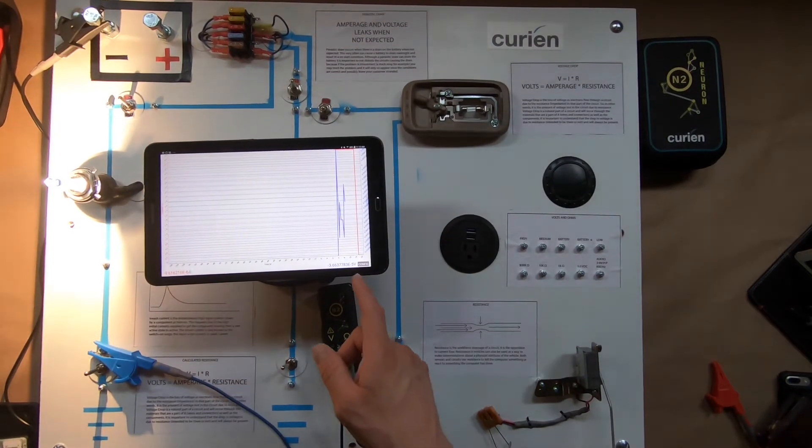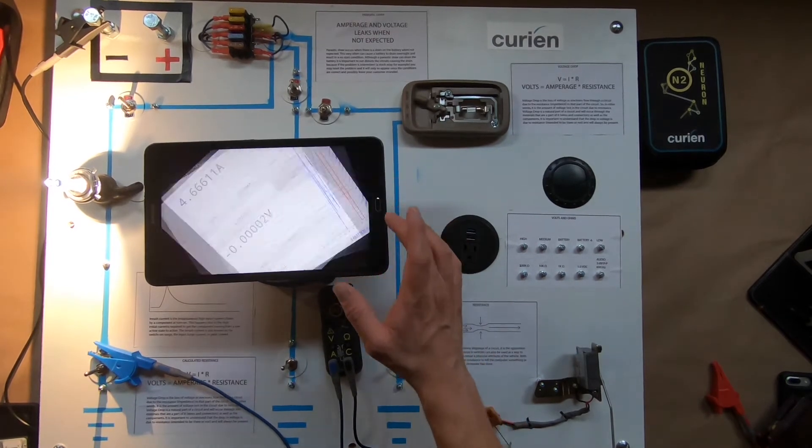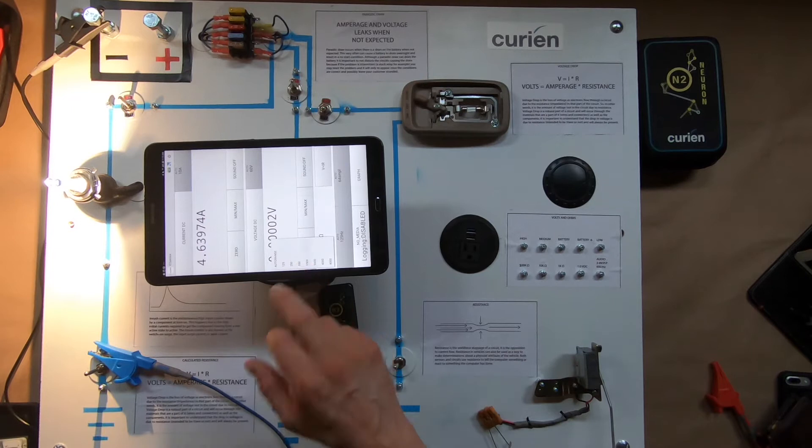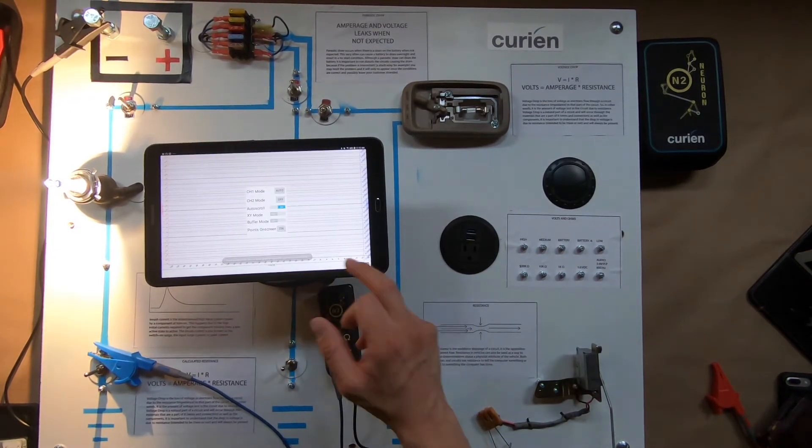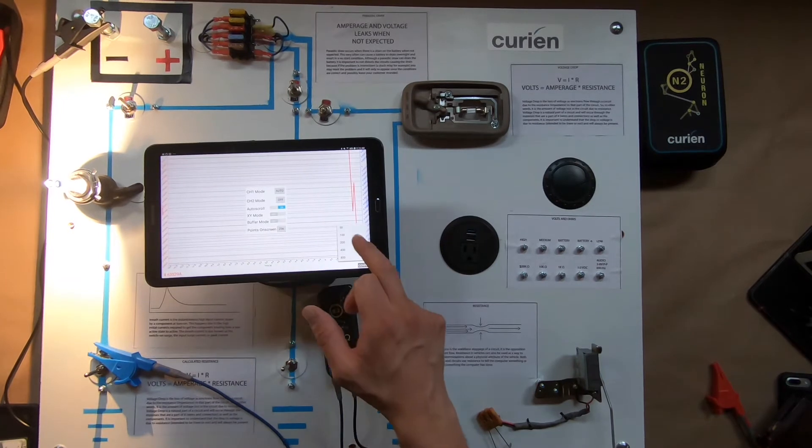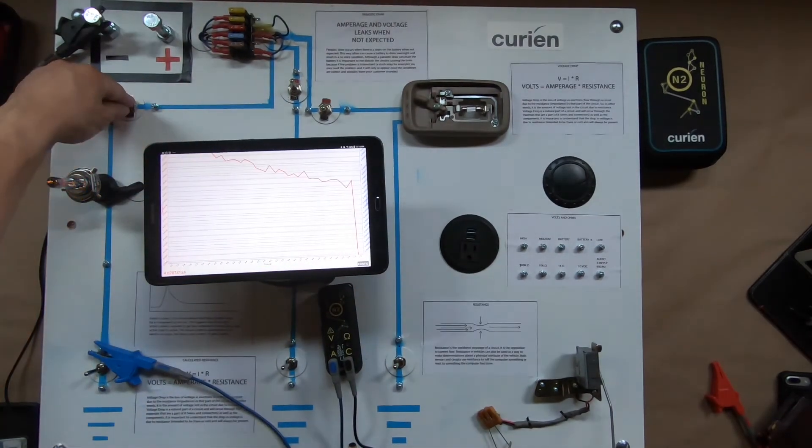If we wanted to, we could actually speed this up a little bit. So let's say our hertz, let's go to a thousand hertz. We'll go back to graphing. We can even change up the points on screen. Let's make it a little bit less so we could watch that inrush current.